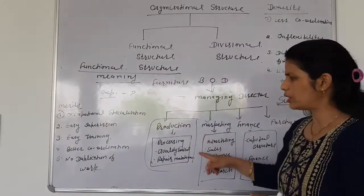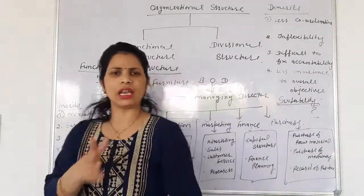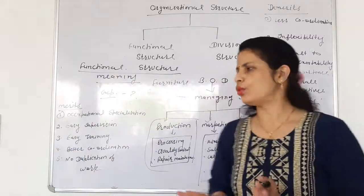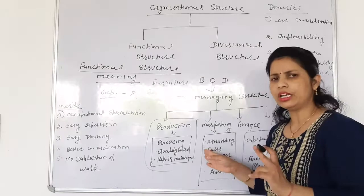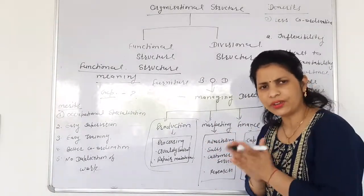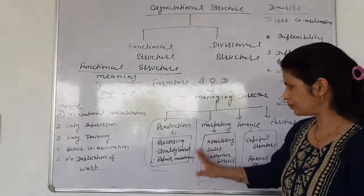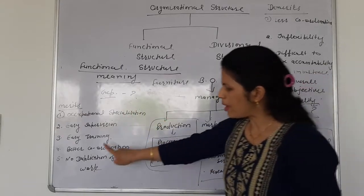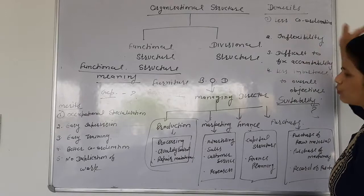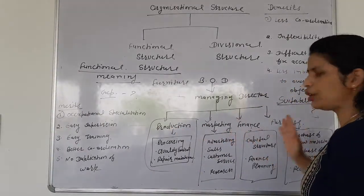Easy training means that because every department performs a single activity, it is easy to provide training to all employees. The fourth benefit is better coordination — in every department less internal coordination is needed. In functional structure, all departments are interdependent on each other.